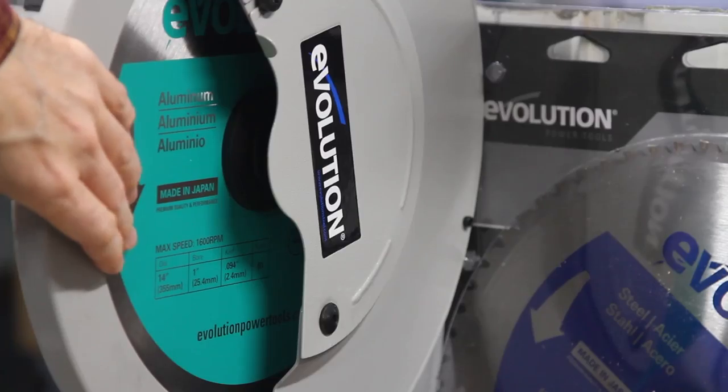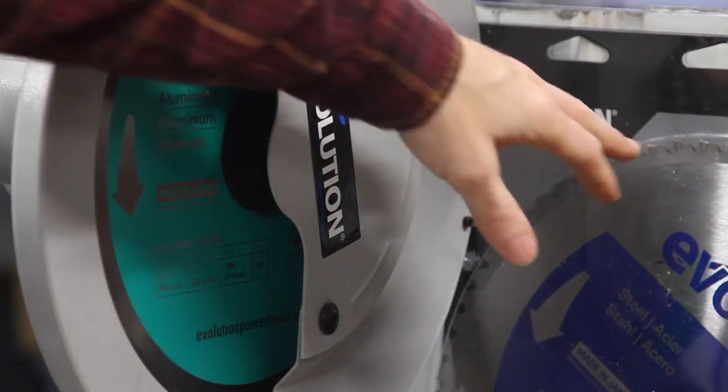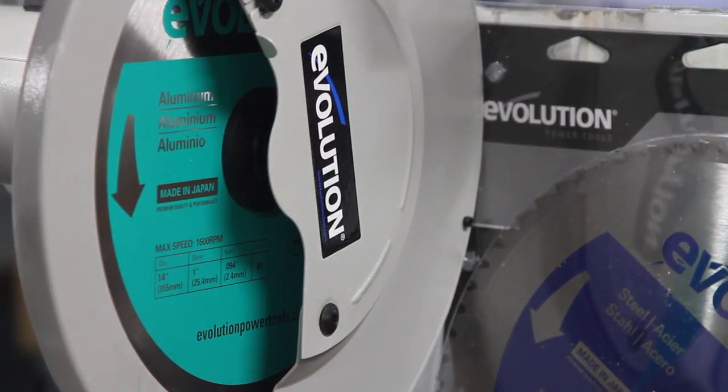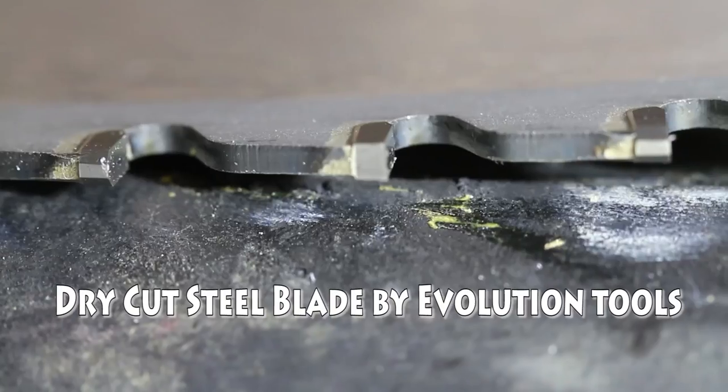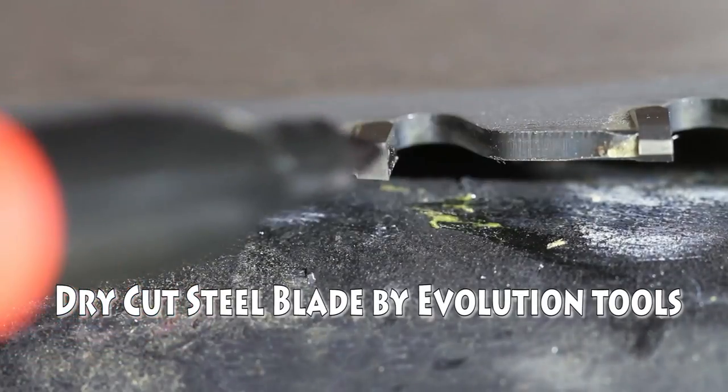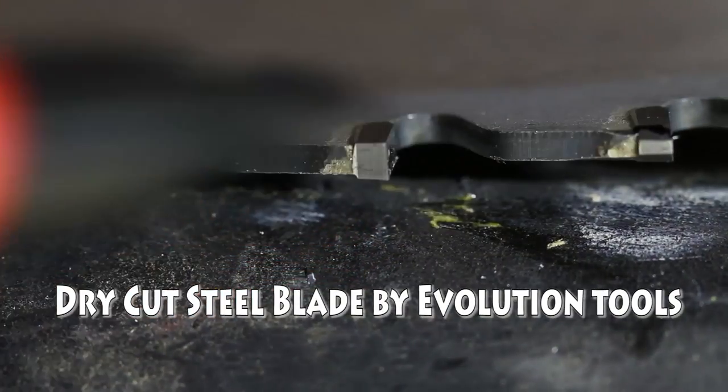This saw blade has 80 teeth, and the steel saw blade that comes with the tool when you buy it is 66 teeth. But not only is the number of teeth different, the way that the carbide is ground on the steel blade is different.